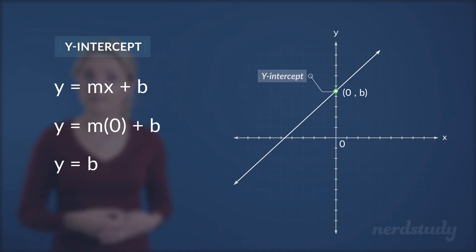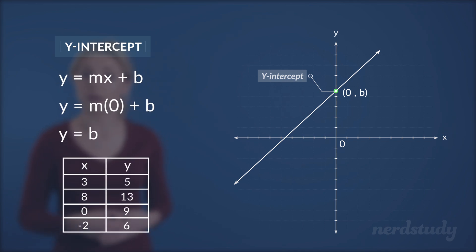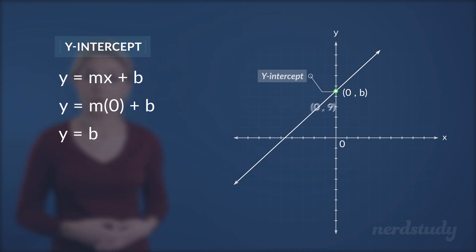What this means is that if we were given a table of coordinate values, and one of the points have an x-value of 0, then we can expect that the y-value to automatically be the y-intercept, or, shall I say, the b variable, in the slope-intercept form in the linear equation.